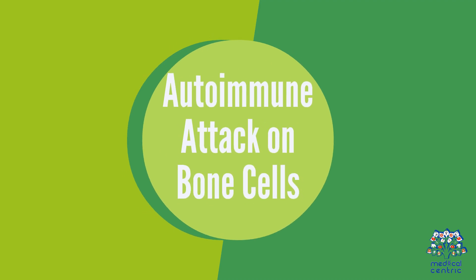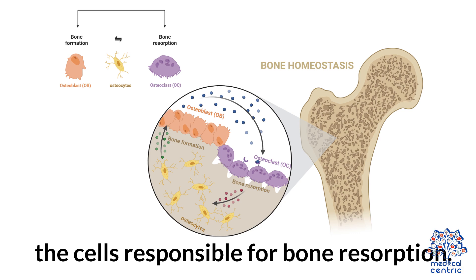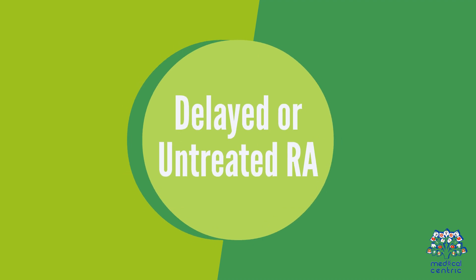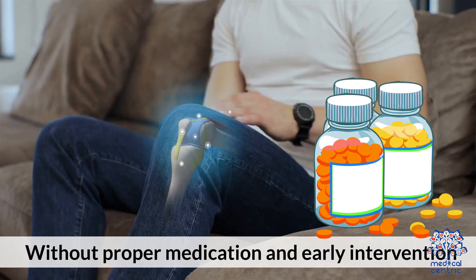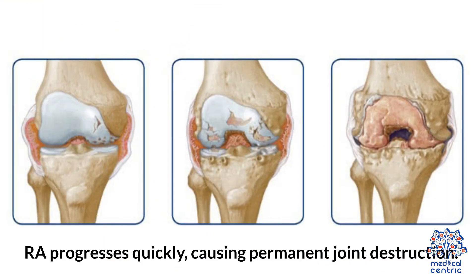Second, autoimmune attack on bone cells: the immune system mistakenly targets osteoclasts, the cells responsible for bone reabsorption, which accelerates bone loss and joint damage. Third, delayed or untreated RA: without proper medication and early intervention, RA progresses quickly, causing permanent joint destruction.